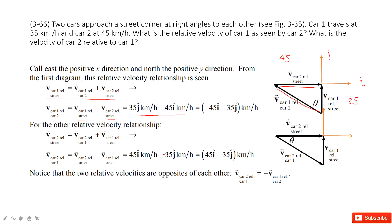The second part asks for the relative velocity of car two relative to car one. Using the same approach, we write the velocity of car two relative to the ground equals the velocity of car two relative to car one, plus the velocity of car one relative to the ground. Rearranging, the velocity of car two relative to car one equals car two to ground minus car one to ground, and writing these in vector component format, we get the result.